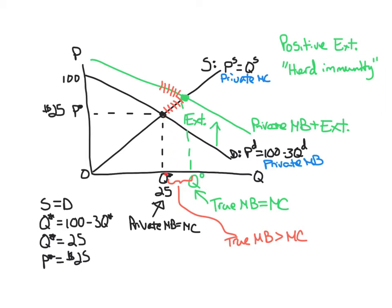So when the market stops at Q star, it's failing to efficiently allocate resources. It's failing to maximize consumer and producer surplus. So here we have a market failure.